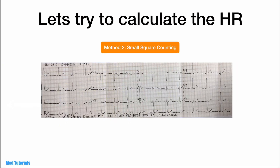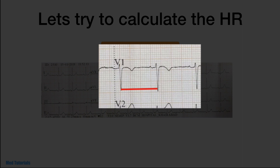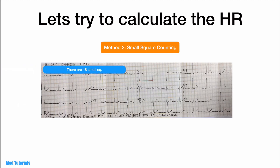Now let's calculate the heart rate in the same ECG using method 2, counting small squares between two QRS complexes. We choose the complex that starts at the beginning of a big square. We see there are 18 small squares. The heart rate is 1500 divided by 18, which equals 83 per minute. As you would have observed, this calculation is a little more tedious but tends to be more accurate.